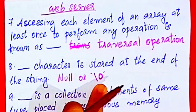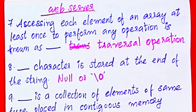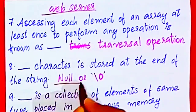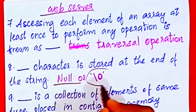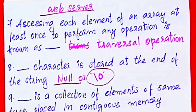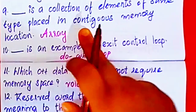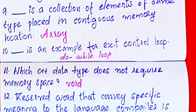The null character is stored at the end of the string. An array is a collection of elements of the same type placed in continuous memory locations.